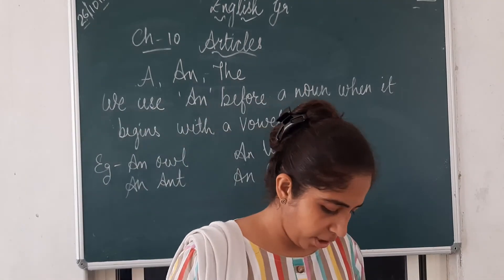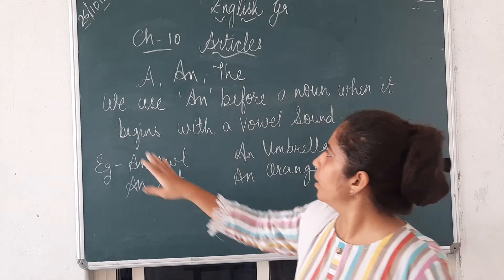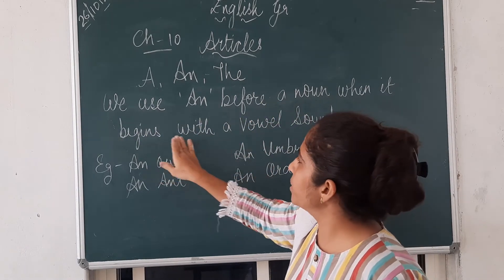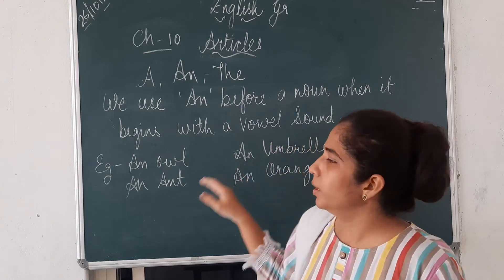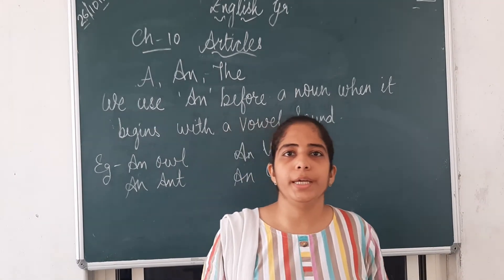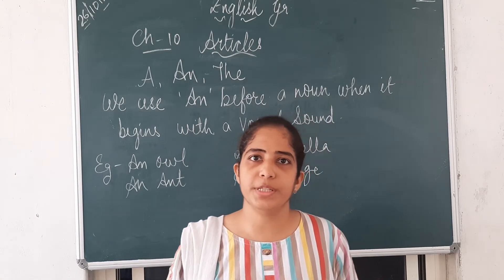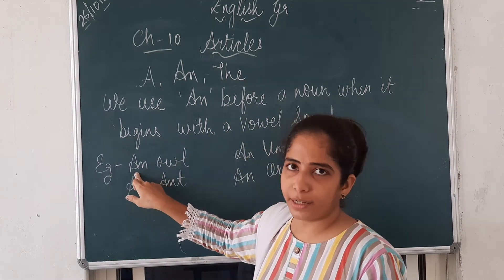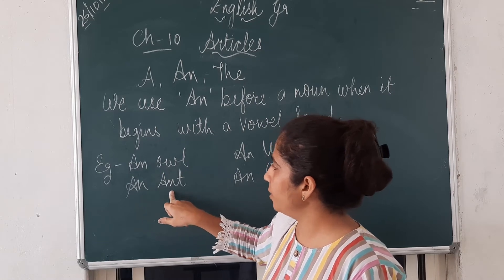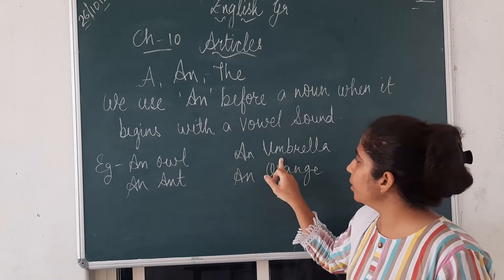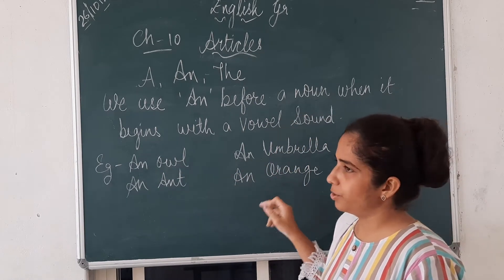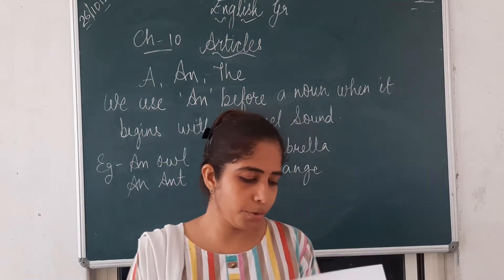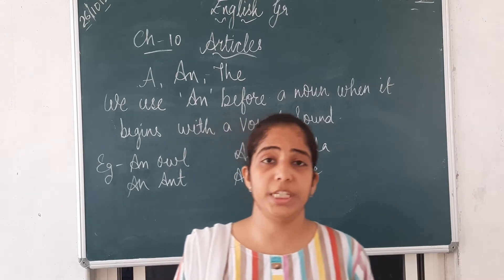The same way, we use AN before a noun when it begins with a vowel sound. That means, when a noun starts with A, E, I, O, U — a vowel sound — then we use AN. For example: an egg, an ant, an umbrella, an orange.